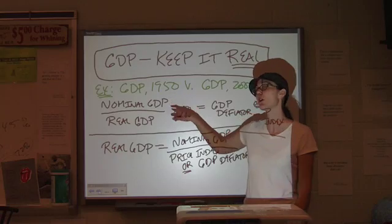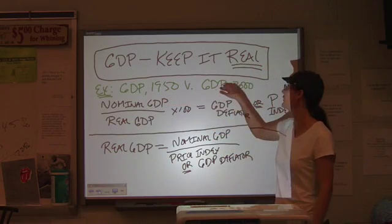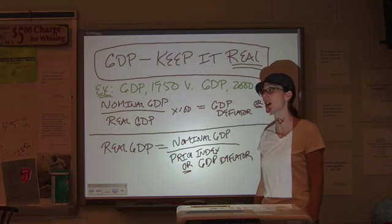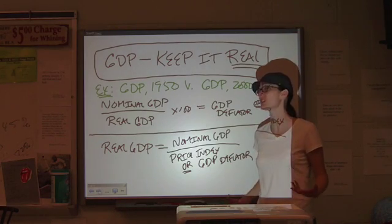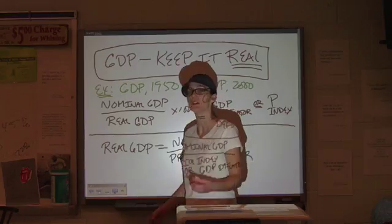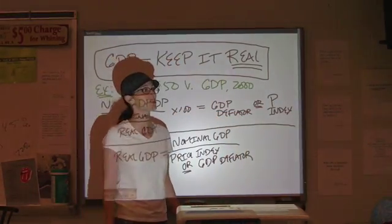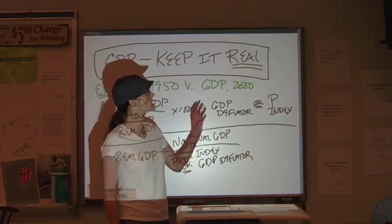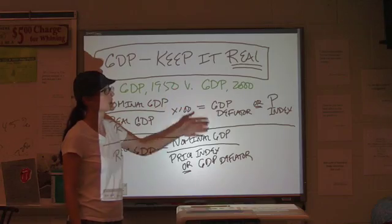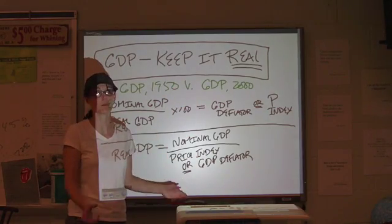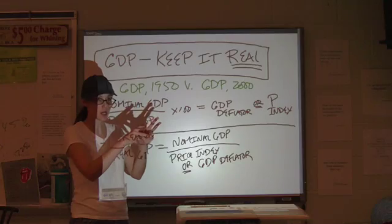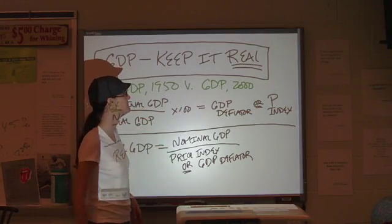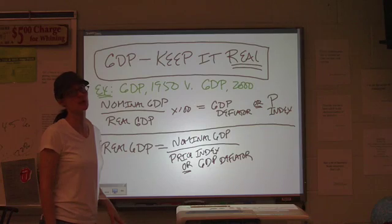For example, if we're trying to compare GDP in 1950 to GDP in the year 2000, of course the number is higher in the year 2000. Does that mean we're actually producing a ton more stuff? We don't know because nominal means we're using today's numbers. Nominal is like that little snapshot of what's happening at a given moment. We have to put them in the same terms.